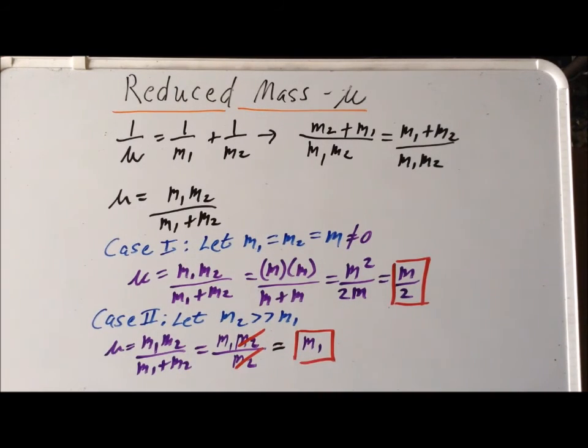So we see very conveniently that when we have a system, that the smallest the reduced mass can be would be in the case where both objects have the same mass, and therefore the reduced mass is half of the object, of one of the two objects in mass. And the maximum it can be is if we have a small object and a heavy object, it, at its maximum, could be equal to the mass of the smaller of the two objects. Thank you very much for your attention. Have a good one.